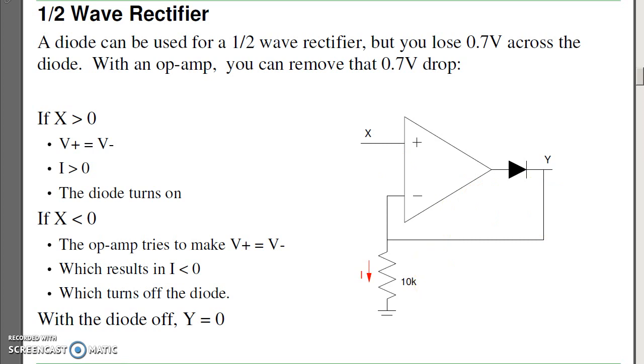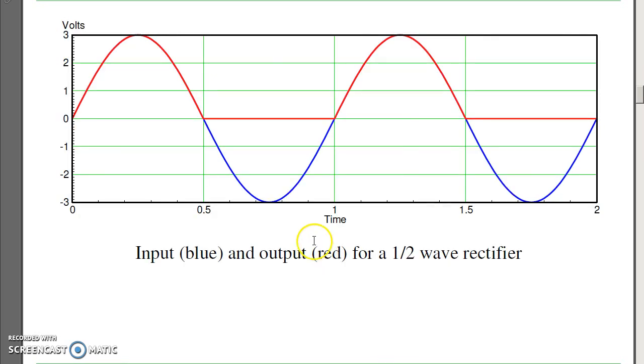What the output looks like is this. Again, for positive voltage, the diode turns on. Negative voltage, the diode turns off. Positive turns on, negative turns off. So there's the half-wave rectifier.